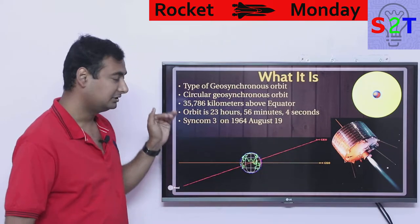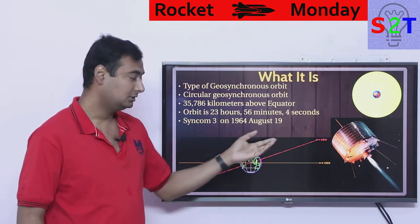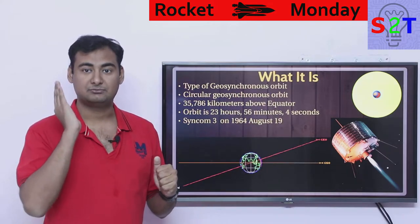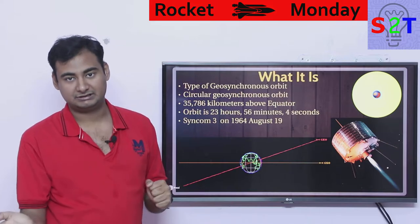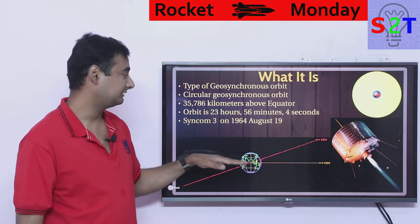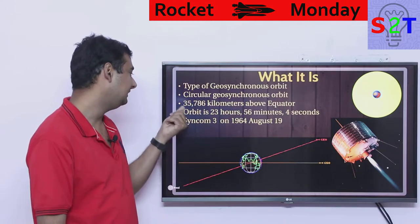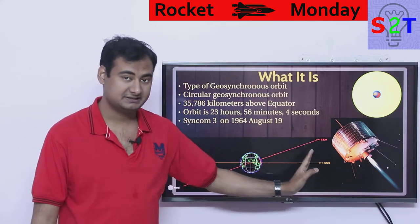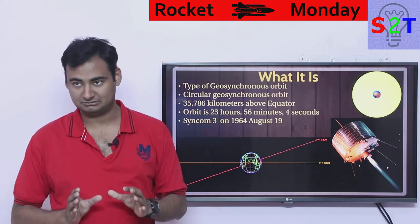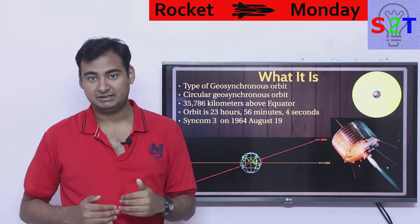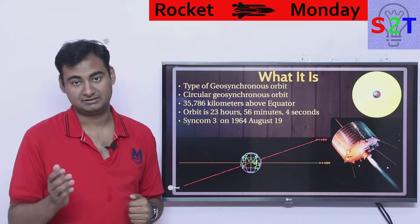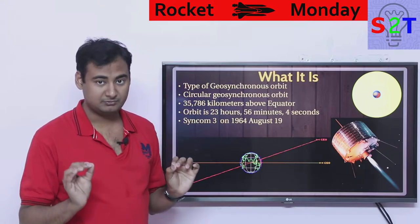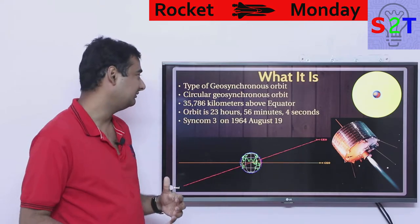Both geosynchronous and geostationary orbits take exactly 23 hours, 56 minutes, and 4 seconds. To go from geosynchronous to geostationary, you go down to zero degrees latitude — the equator. At the equator, you have to be exactly at the band of 35,786 kilometers altitude. Be mindful: this band is very narrow. You can't have a satellite even slightly above or below. If you go a bit above, you end up in what's classified as graveyard orbit; if below, it's MEO.